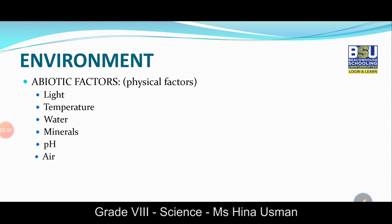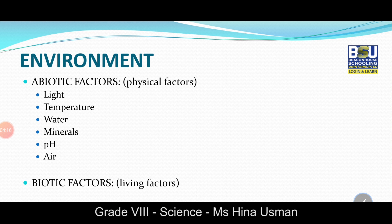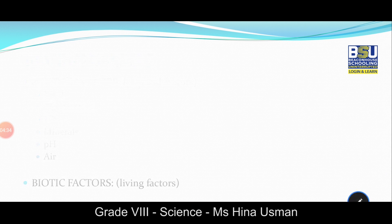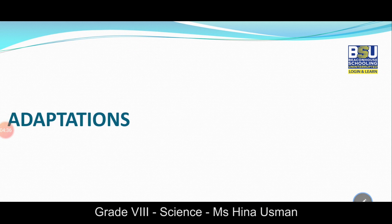The biotic environment is made up of living things such as plants and animals, which may affect the life of organisms in any way. Every organism interacts with other organisms by feeding on them or being eaten by them, cooperating with them, or competing with them for food, mates, water, light, air, or minerals. They are interdependent on one another for survival.